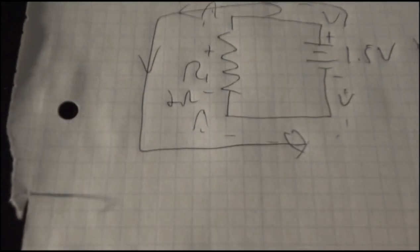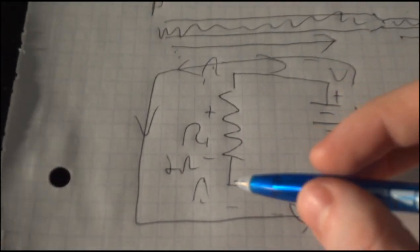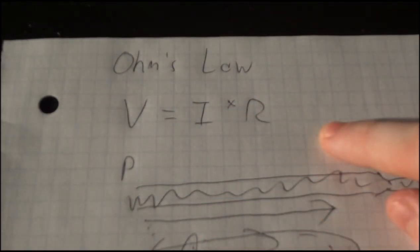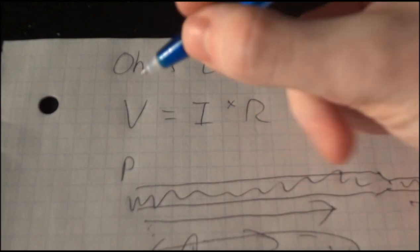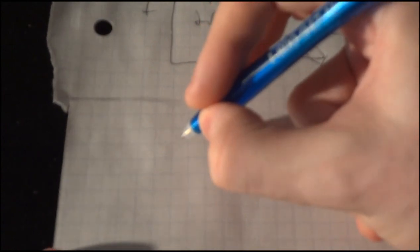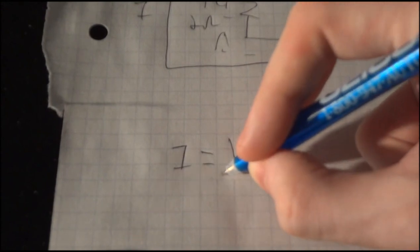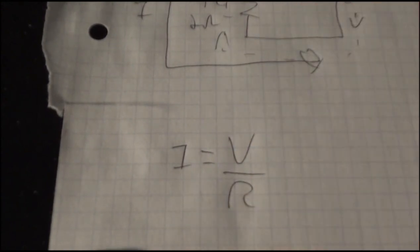Now we're not looking for voltage in this circuit. What we want to find is I, because we want to find the current in this circuit. So we can rearrange Ohm's law to look for that, because right now it's set up to be looking at voltage. So let's rewrite that because we want to look for current. So we're looking for I, and then it's voltage over resistance.